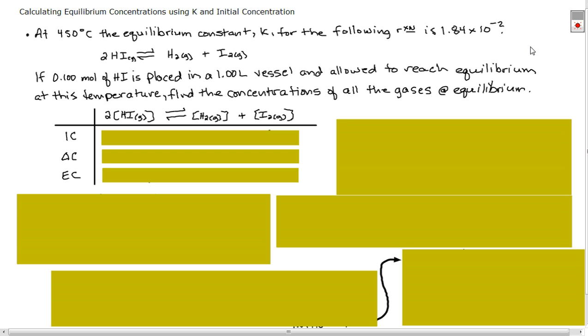So our first question here, it's pretty basic, just like the other ones. At 450 degrees Celsius, the equilibrium constant K for the following reaction is 1.84 times 10 to the minus 2. You probably will need to pause the video as we go through because the steps will start to get complex. So we've seen this reaction before, the decomposition of hydrogen iodide back into the two elements, hydrogen and iodine.